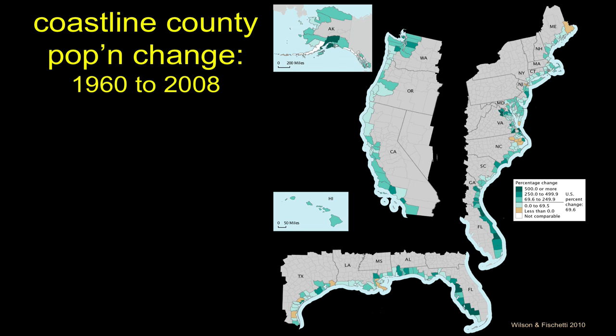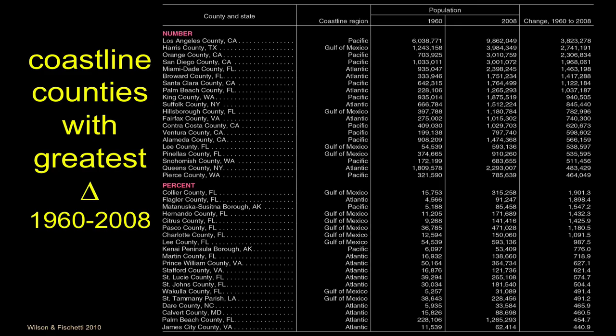Here's what the data looks like. The top half is gross population numbers and the bottom half is percentage change. The middle column is population in 1960, the next column is 2008, and the last is the change. Whoever guessed LA County as the most numerically increased county is correct. For proportional change, it's Florida counties — Collier County went from just under 16,000 people to 315,000.